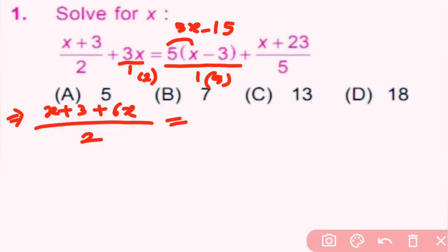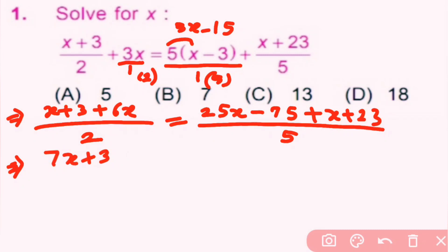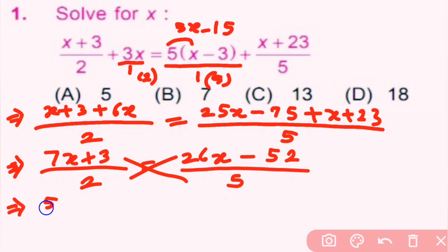6x, and here 5x into 5 is 25x minus 15 into 5 is 75, and this x plus 23, their denominator is 5. Here x plus 6x is 7x, so 7x plus 3 by 2 is equal to 25x plus x which is 26x, and minus 75 plus 23 is 52, all over 5.